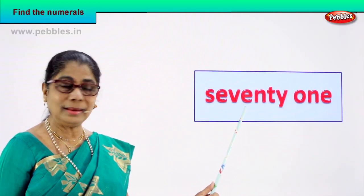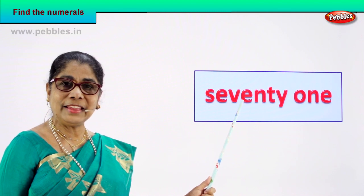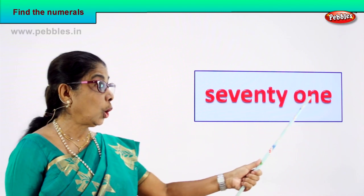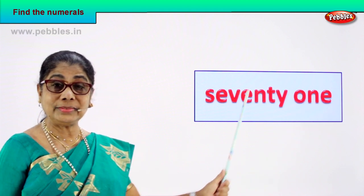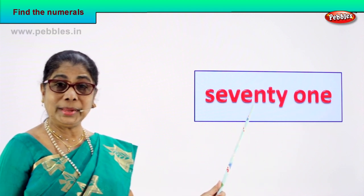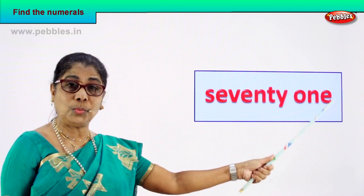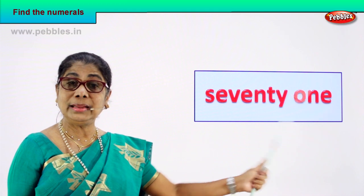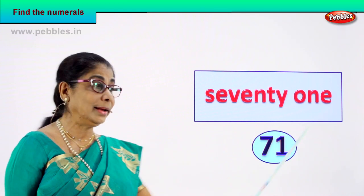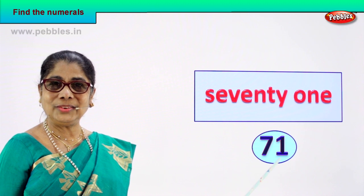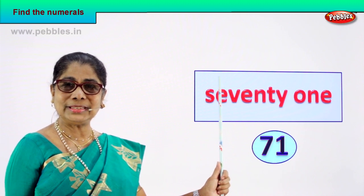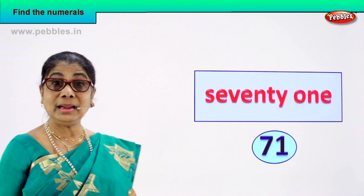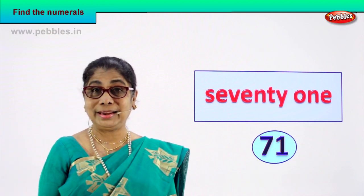Spell: S-E-V-E-N-T-Y, 70. O-N-E, 1. 71. How do we read this? 71. How do we write the numeral? 71 — seven and one. You will learn to write the numeral for this number: 71. Seven and one, 71. Good.